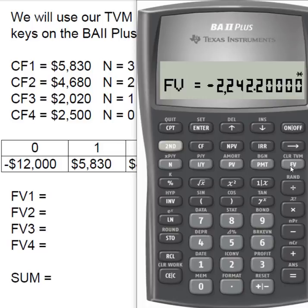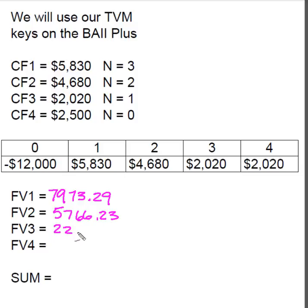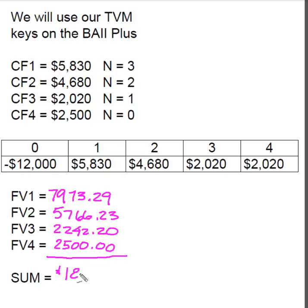Now I'm going to take these values and sum them up. Cash flow one: $7,973.29. Cash flow two: $5,766.23. Cash flow three: $2,242.20. Cash flow four had no time to grow, so it's simply $2,500. Summing all of these gives me a total of $18,481.72, which is the future value of all of these cash flows.